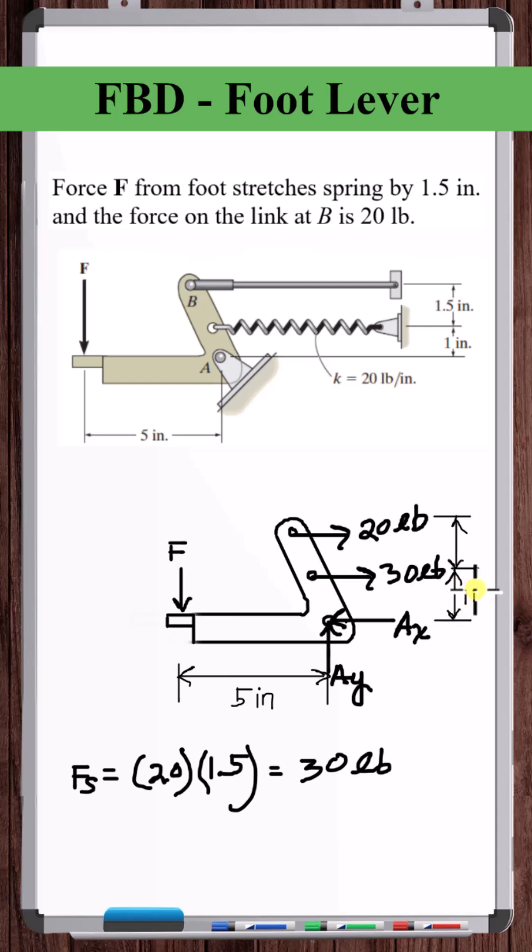These two points are 1 inch apart. These two points are 1.5 inches apart. And that's your free body diagram.